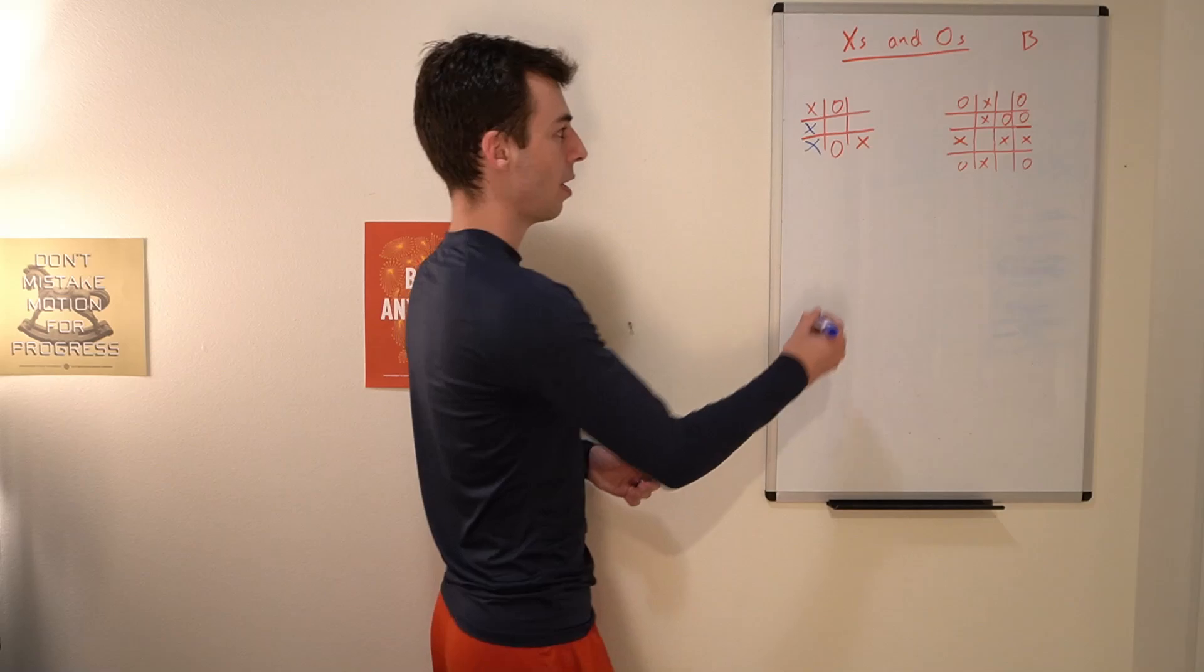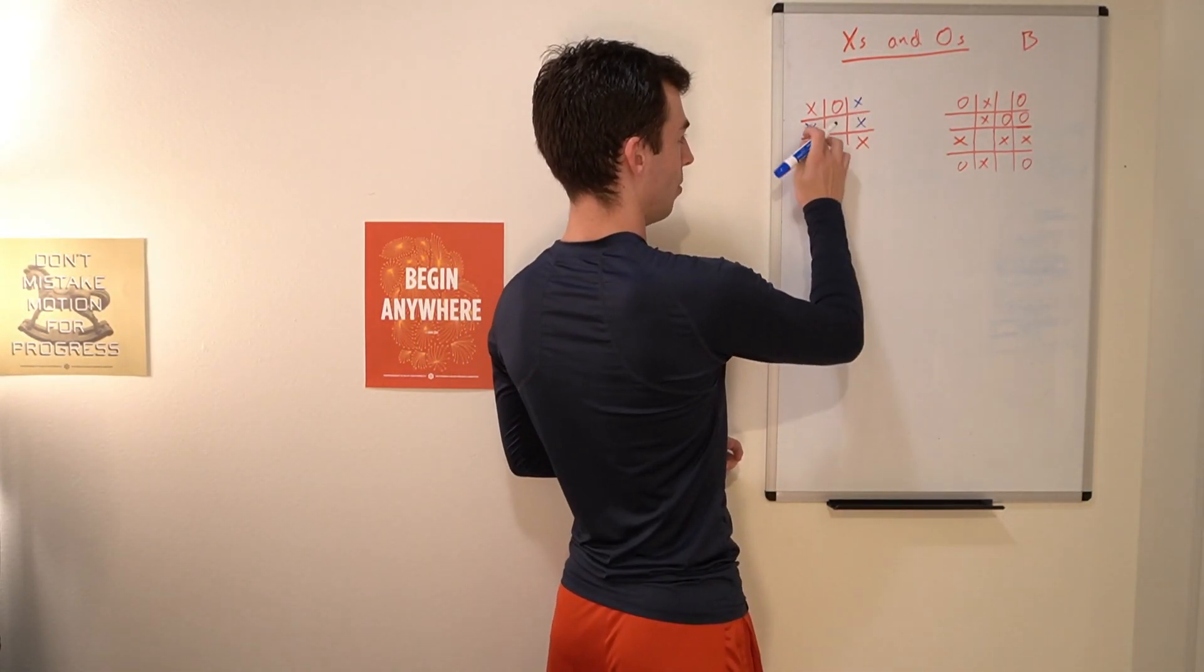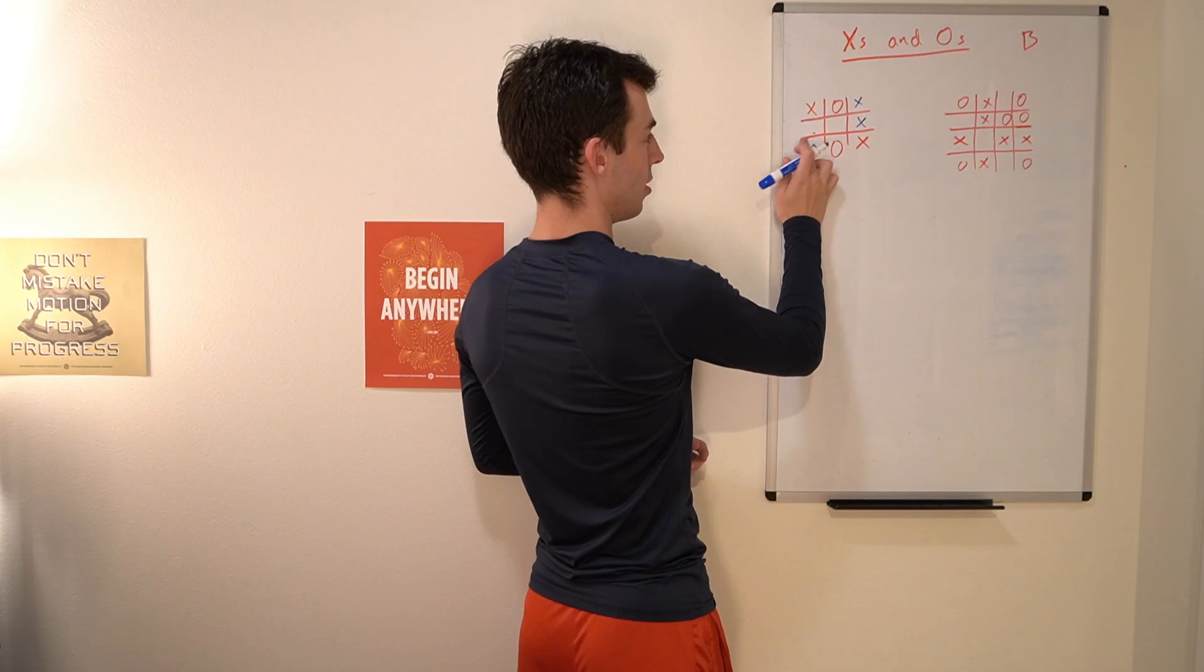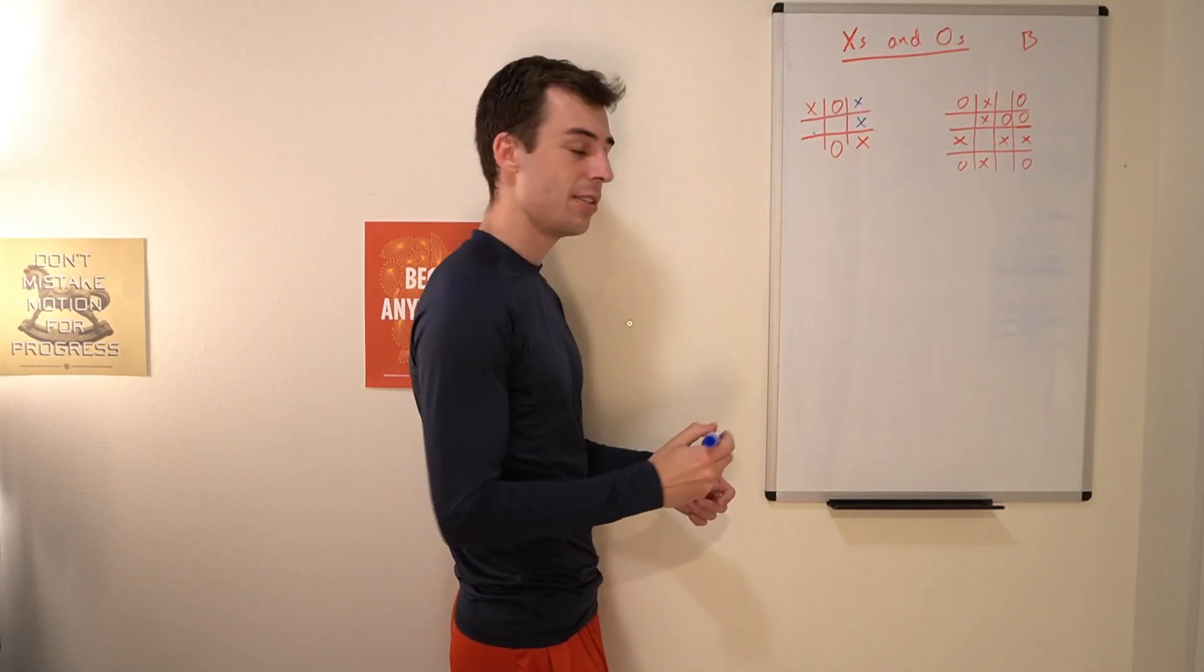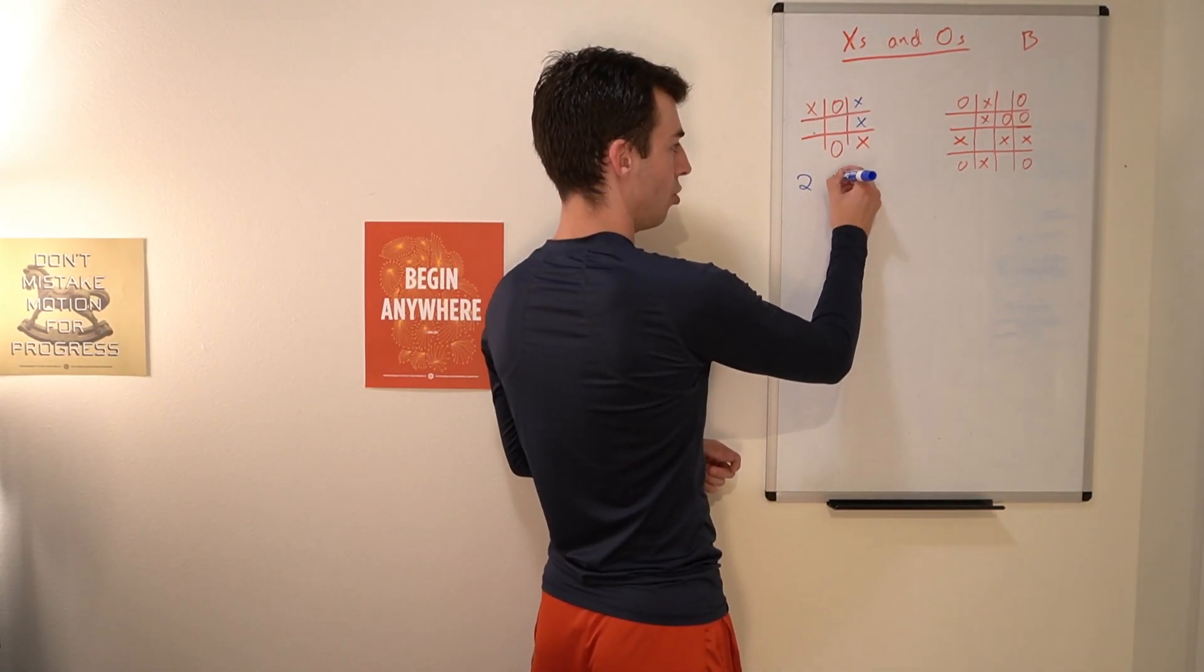You can also solve it by filling out two X's in this column as well, and that's another way of winning. So in this case, two X's are required, and there are two ways of solving it.